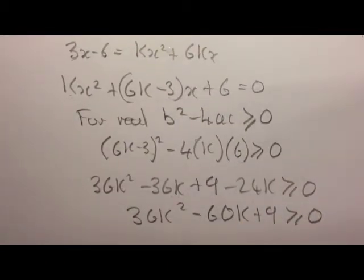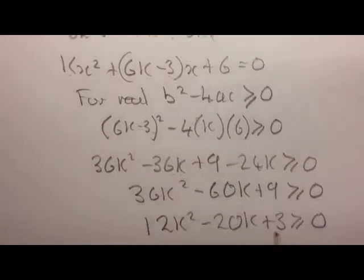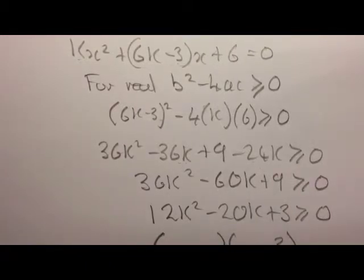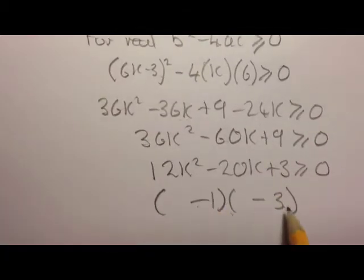If we divide by 3, we get 12k squared minus 20k plus 3 is greater than or equal to 0. If we factorize, the 3 can only be 3 and 1. It has to be negative to make it positive, so it must be minus 1 minus 3 to make the 3.